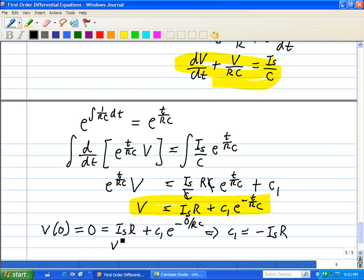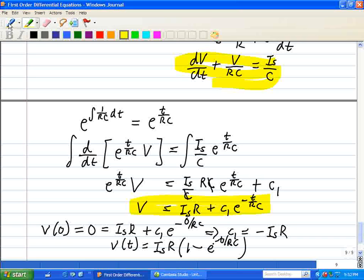And then for our voltage, which is a function of time across the resistor and capacitor, is equal to ISR times 1 minus E to the negative T over RC. So this is our particular solution.